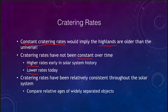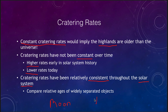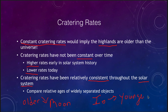While cratering rates have not been constant over time, they have been consistent — meaning they've been about the same wherever you were in the solar system. So we can look at the number of craters on widely separated objects, things like the moon and Io, one of the moons of Jupiter, and use those to compare relative ages. We find that the moon has lots of craters and Io has none, so we know the moon is older and Io is younger. Just by looking at them we can get the relative ages of objects nowhere near each other in the solar system.